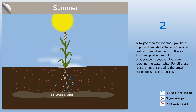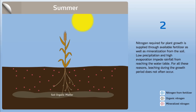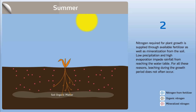Summer. Nitrogen required for plant growth is supplied through available fertilizer, as well as mineralization from the soil. Low precipitation and high evaporation impede rainfall from reaching the water table. For all these reasons, leaching during the growth period does not often occur.